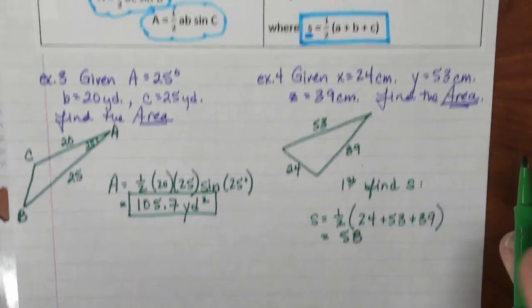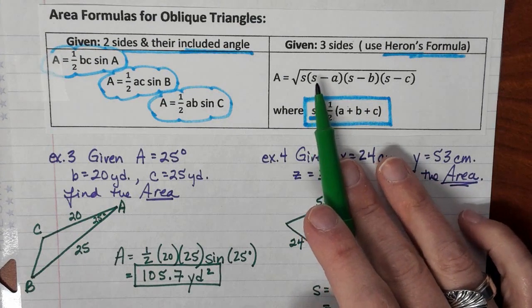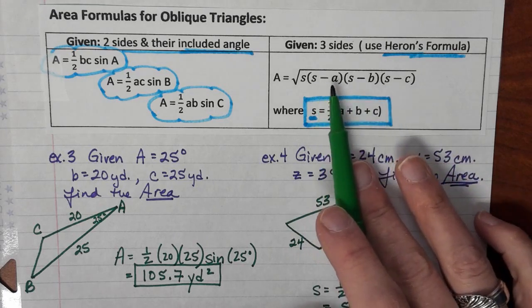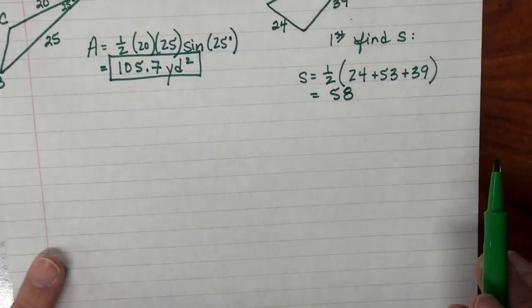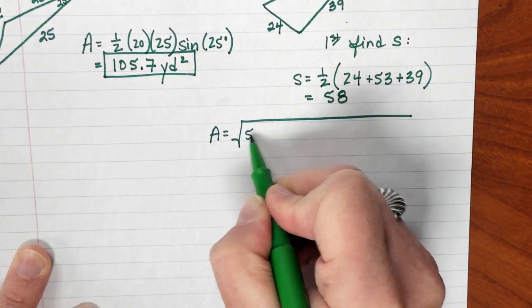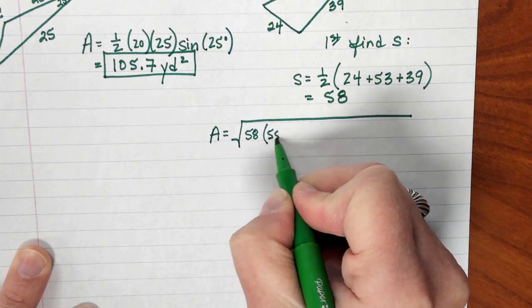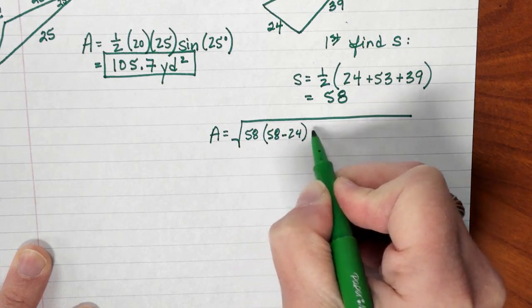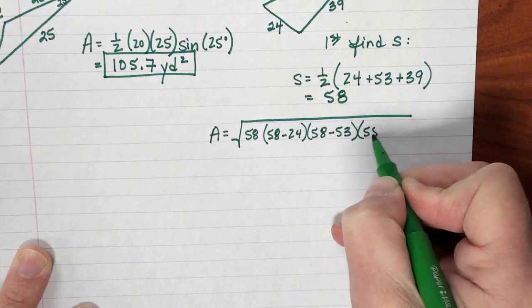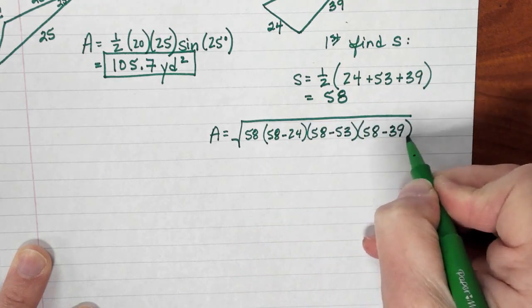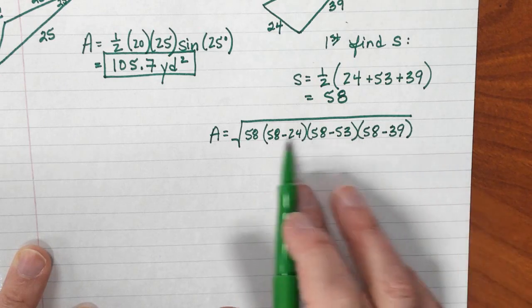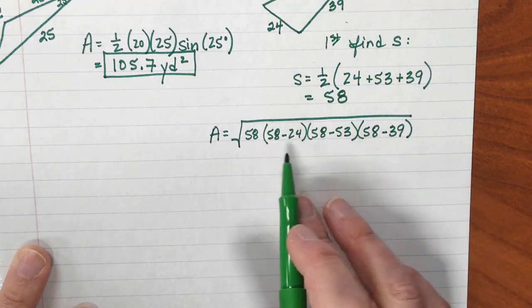Now, Heron's formula tells me that I'm going to take the square root of this product. In the product, I have the difference between this number S and each of the sides. So I recommend writing this out just so that you don't miss anything. Square root of 58 times 58 minus 24, 58 minus 53, and 58 minus 39. This is a product, right? So it doesn't matter the order in which you do the subtraction. You just need to make sure you have the product of each of the four terms.